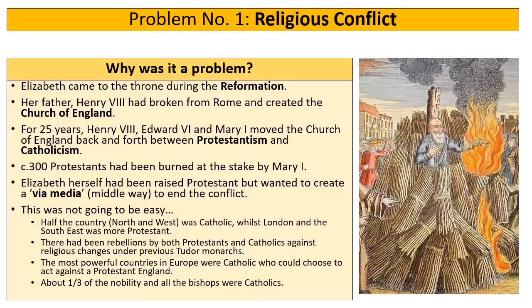Finally, some of the most influential people in England — around a third of the nobility and all of the bishops of the Church of England — were Catholics. These groups had influence in Parliament and would be able to block changes that Elizabeth might want to make. So religion is a problem because of this division and conflict prior to her coming to the throne, and her desire to create a middle way was clearly not going to be easy.